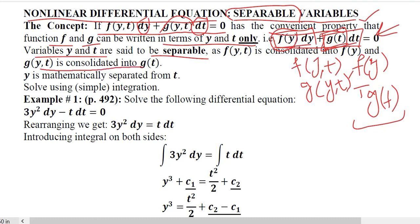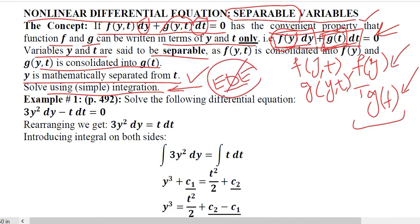This consolidation has happened in the form of g(t) and f(y). Now we can say that y is mathematically separated from t. How can we solve it? The good news is that it is very simple and easy because it is simply through integration. We don't have to develop any density procedure just like we did in exact differential equations. We can simply do integration and find the answer.